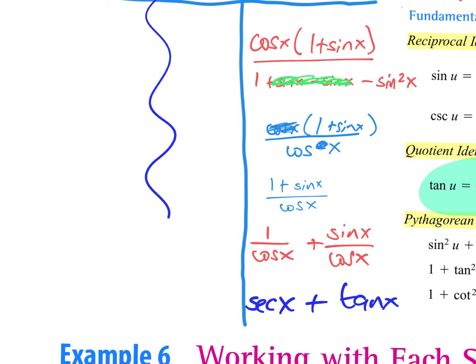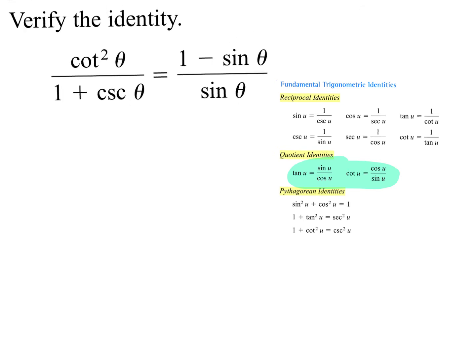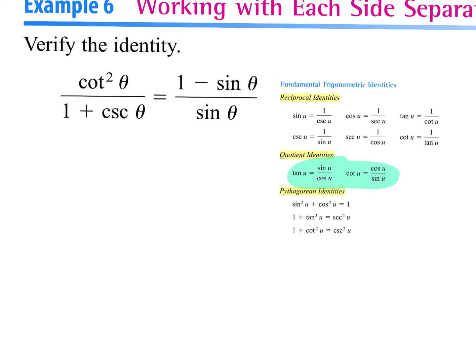I can rewrite one over cosine x as secant x, and sine over cosine as tangent of x. And is that what we were trying to prove from the get go? Very good job, guys. Now you guys look at this right away and say the left one is harder — I agree because the left-hand side has two terms in the denominator, the right-hand side only has one. So let's start working with the left-hand side.